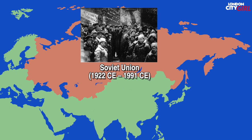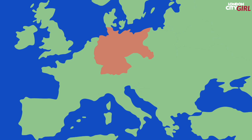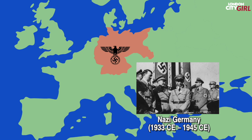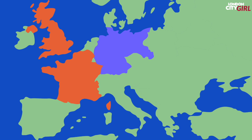The humiliation of Germany at the end of World War One helped lead to the rise of Nazi Germany. Racism, especially anti-Semitism, was a central feature of the regime. As Nazi Germany made increasingly aggressive territorial demands across Europe, war was declared by the UK and France in 1939 CE, marking the start of World War Two.